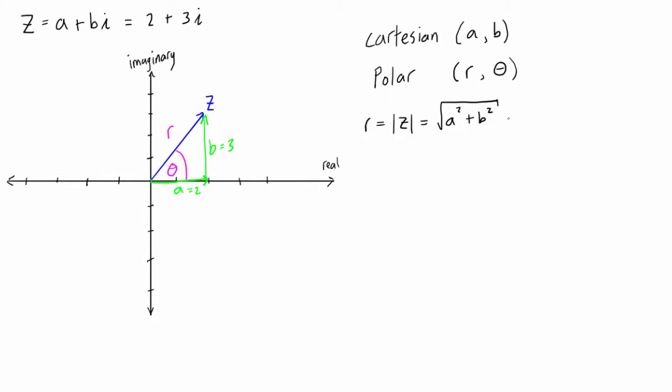So if we just fill this in a little bit, we get the square root of 2 squared plus 3 squared, which is the square root of 4 plus 9, which is the square root of 13. So this is the modulus of z, and this is also our value for r when we're looking at it in polar form.